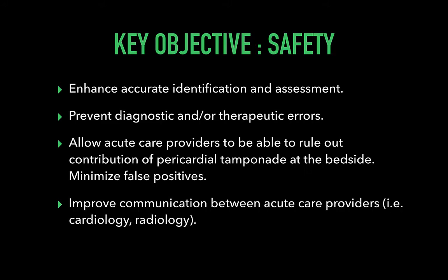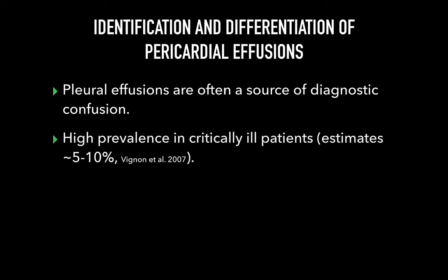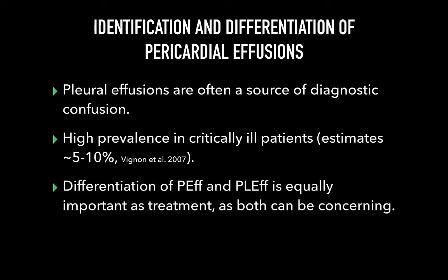The key objective whenever you do pericardial assessments is safety — trying to prevent a diagnostic error and to allow accurate communication with different services involved in management. Nobody expects somebody who does POCUS to have a perfect diagnosis every time, but they expect them to have an idea of the gross findings. The most common cause for a completely anechoic space is a pleural effusion, with a high prevalence in critically ill patients, estimated around 5 to 10 percent in some studies, and that should always be the first question to ask whenever you see fluid around the heart on echo.